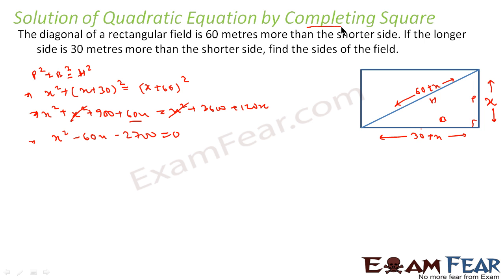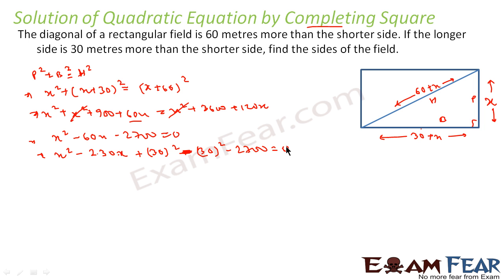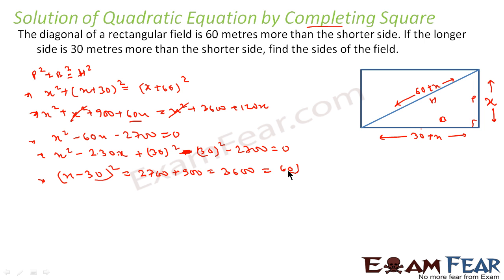Now I have to solve using completing the square. The equation is x² − 60x + 900 − 3600 = 0, which is x² − 60x − 2700 = 0. I subtract and add 30²: so (x − 30)² − 30² − 2700 = 0. This gives (x − 30)² = 2700 + 900 = 3600, which equals 60².